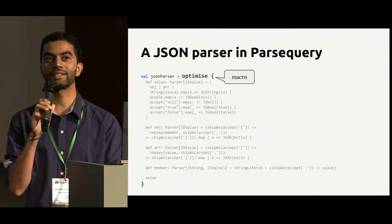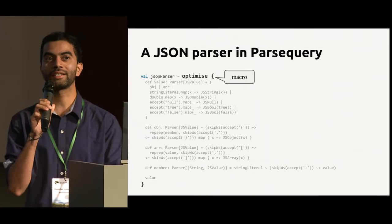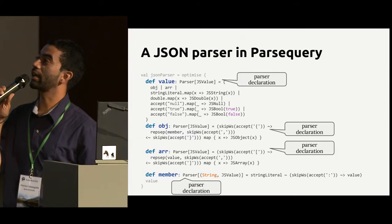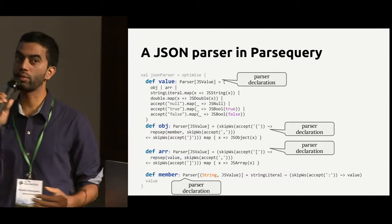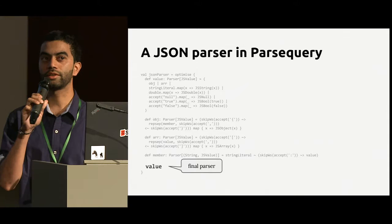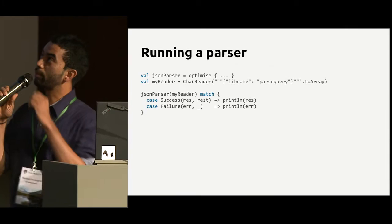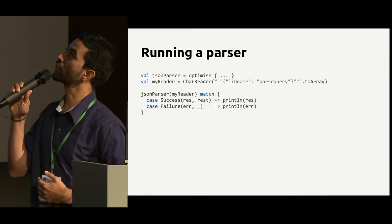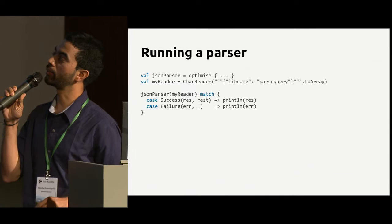What does this macro allow as syntax inside? It takes a sequence of parser declarations. Here you see a traditional JSON parser taken from Martin's book Programming in Scala. At the very end you need to have a final parser that you return. You can use the parser by calling it on a character reader, and you have two possibilities: either the input succeeds or it fails.